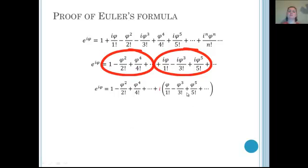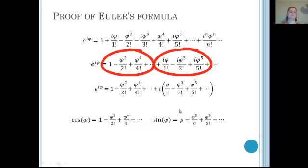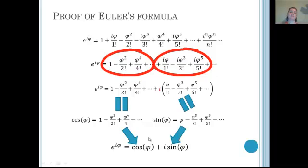After grouping, we factor out i from the terms containing i. We recognize that these two groups are the known Taylor series for cosine(φ) and sine(φ). Substituting those in, we obtain Euler's formula: e^(iφ) = cosine(φ) + i·sine(φ). That completes our proof.